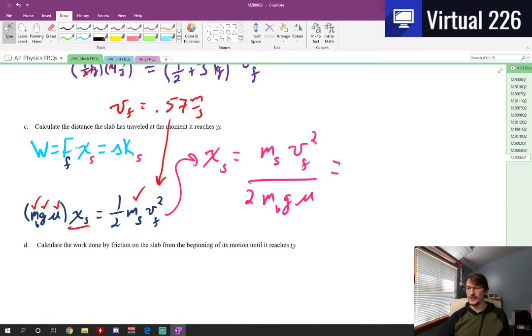If we throw all of this together, what are we going to get? Let's see, the mass of the slab was three, 0.57 squared times three, then divided by two divided by 0.5. So it's like multiplying by two, divided by 9.8 and then divided by 0.2. That gives us a quantity of 0.49. Or if we round it up, we'd get 0.50 meters. Okay.